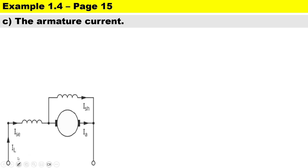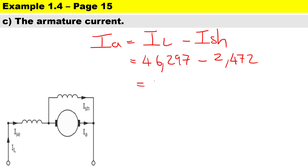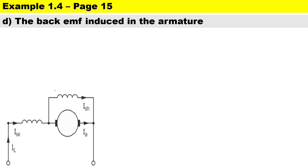To calculate the armature current Ia: since it is a motor, Ia = IL − I_shunt = 46.297 − 2.472 = 43.825 amperes.